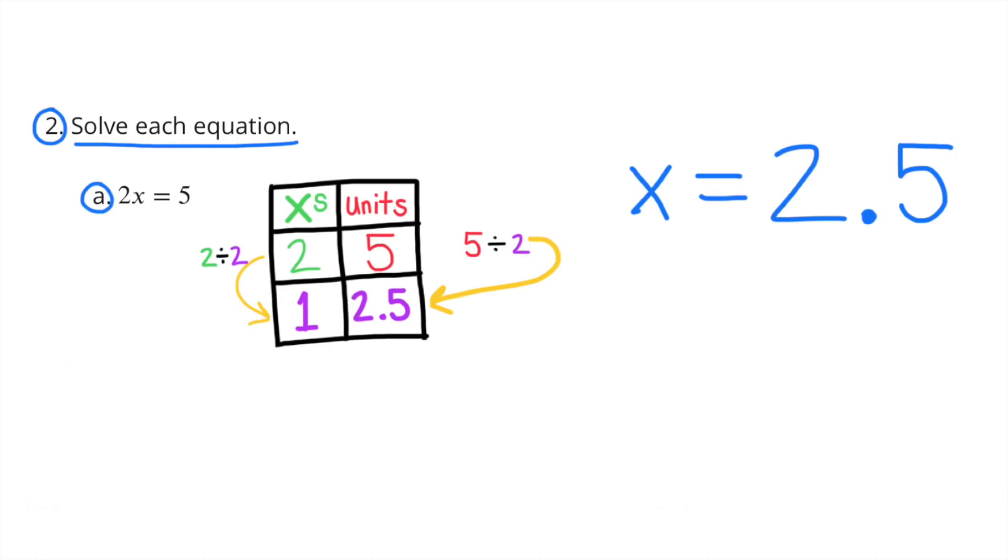Number 2: Solve each equation. Problem A: 2x equals 5. I built the chart. On the left-hand side, I have the number of x's, and on the right-hand side, I have the number of units. 2x equals 5 units. In order to get 1x, I divided the 2x by 2, and I got 1x. Then I had to divide the 5 by 2, and I got 5 over 2, or 2 and a half. x equals 2 and a half.